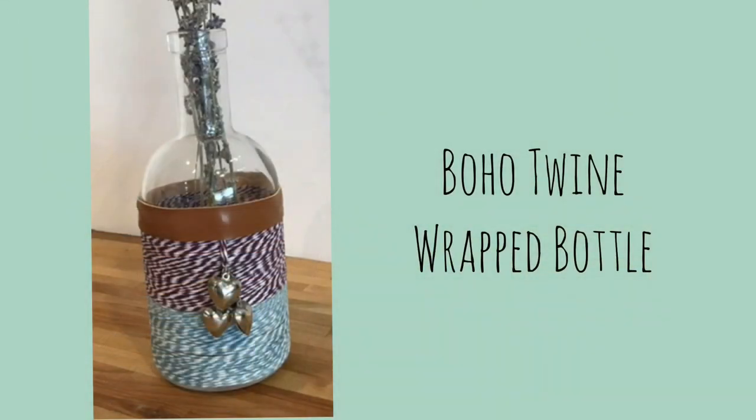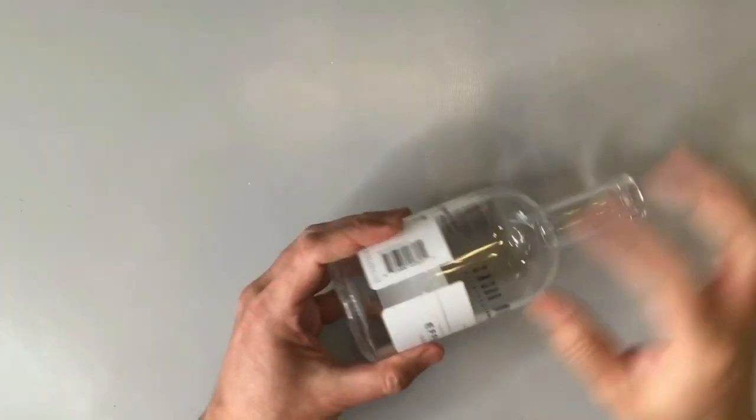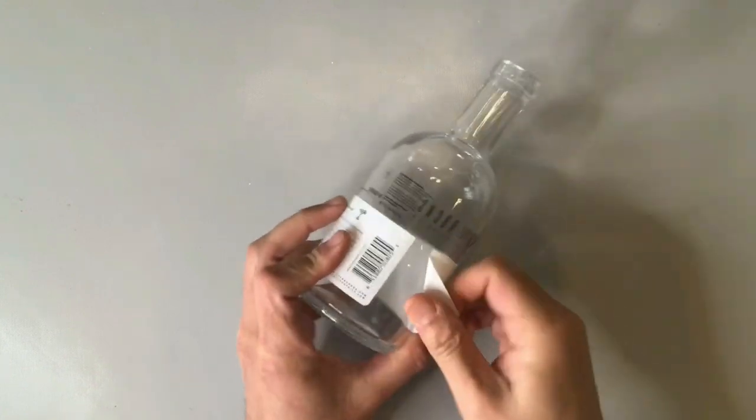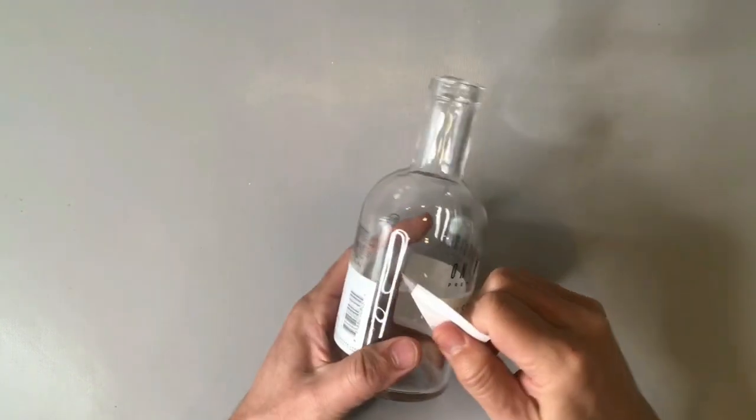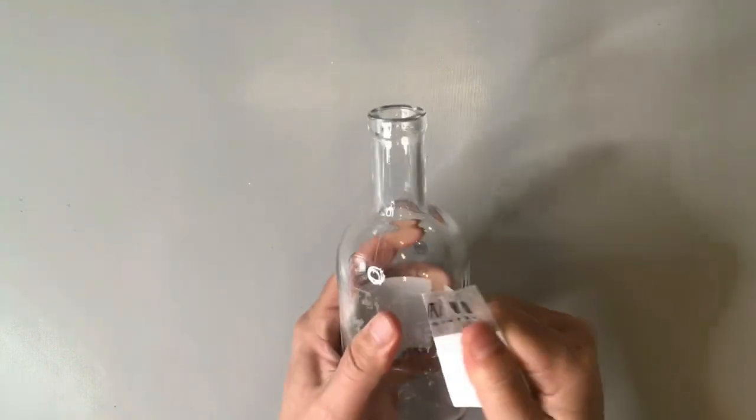For this project I'm using some Baker's twine to create a really lovely boho twine wrapped bottle or jar and it starts with this really cool bottle that used to contain a cocktail mixer. I really love the shape of it, the simplicity of it, and I thought it would make a great base for this project.